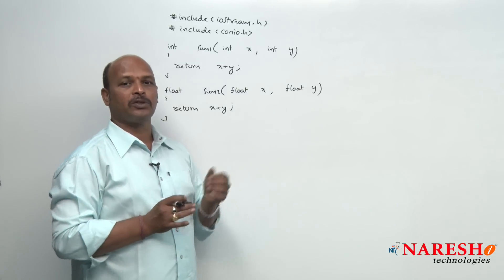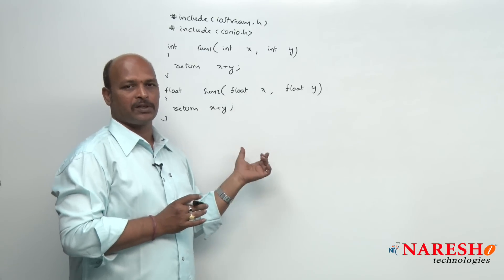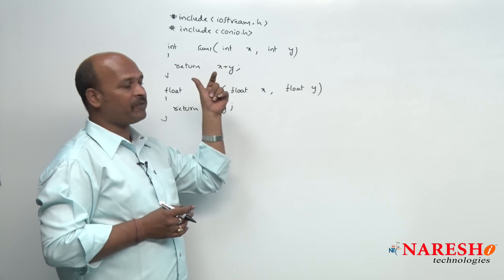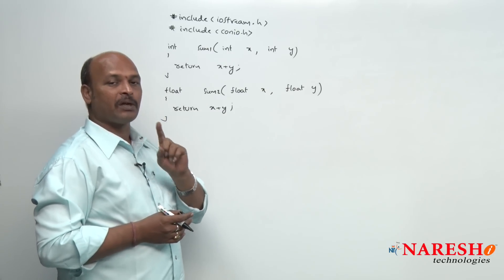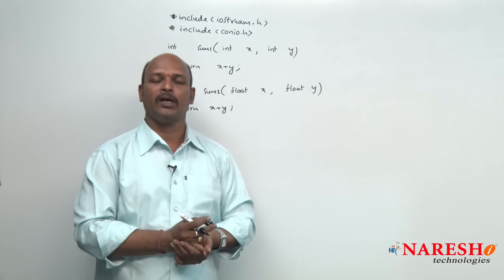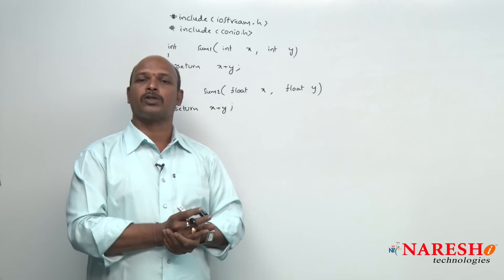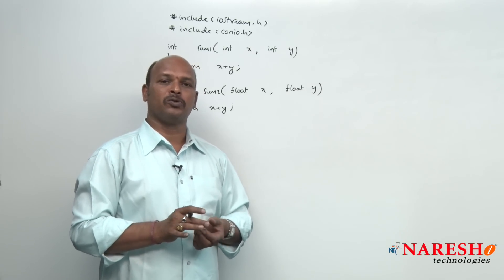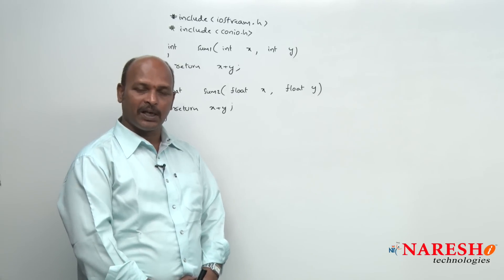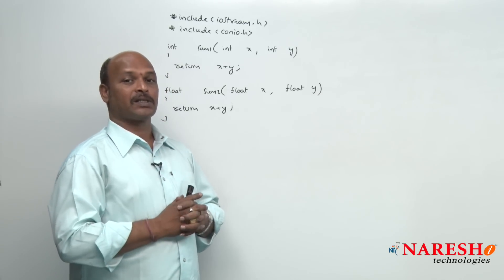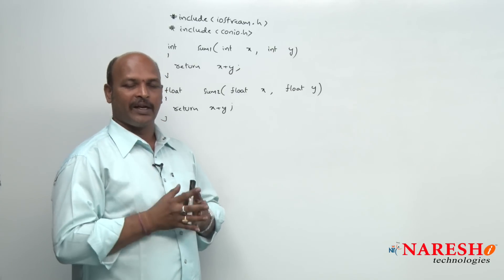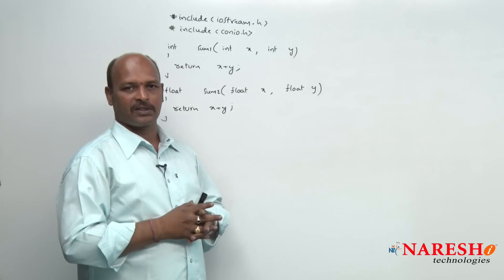But the program code is never reduced — the size is never reduced. Now I want to reduce this program size. I want to declare only one function that can perform all the operations. How to do that? The only solution is templates, which are also called generics. A template allows you to design one function for a whole family of functions — one function for several function declarations.